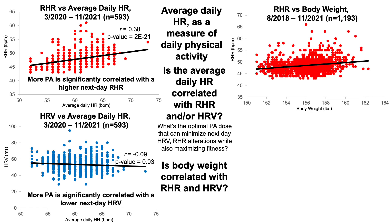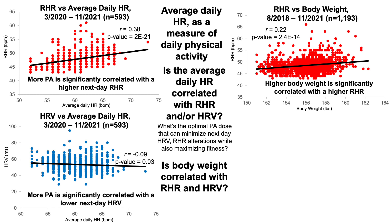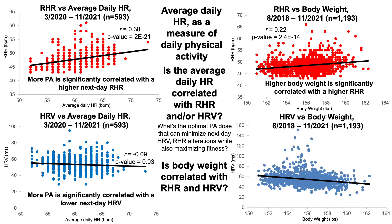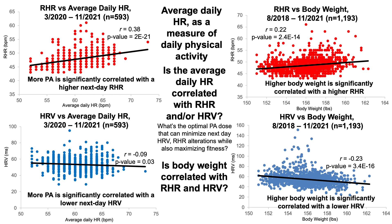What about body weight? Is that correlated with heart rate variability and resting heart rate? I've been tracking and recording my resting heart rate and heart rate variability since August 2018, and measuring morning body weight every day since 2015. So I have almost 1,200 days of data. The higher my body weight, that's significantly correlated with a higher resting heart rate. Conversely, the higher my body weight, the lower my heart rate variability — significantly lower, as shown by the p-value and the correlation coefficient r.